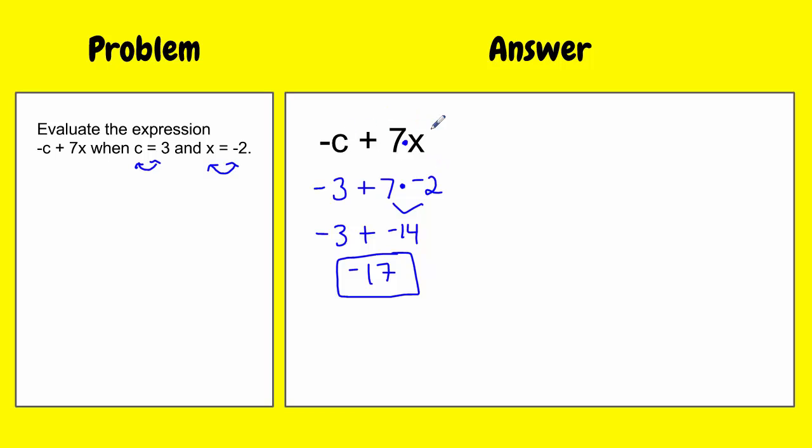So we started with an expression. We evaluated it when c is 3 and x is negative 2. And once you simplify it, you're going to get a single answer. And that's how you evaluate an expression.